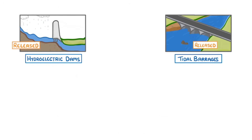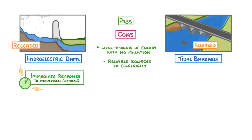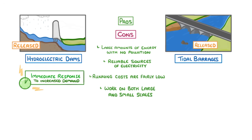The last thing we need to cover are the pros and cons of each type. In both cases, we can generate large amounts of energy with no pollution, and they're also very reliable sources of electricity. Hydroelectric dams, in particular, can provide an immediate response to an increased demand. Another benefit of both methods is that the running costs are fairly low, and they can work on both large and small scales.